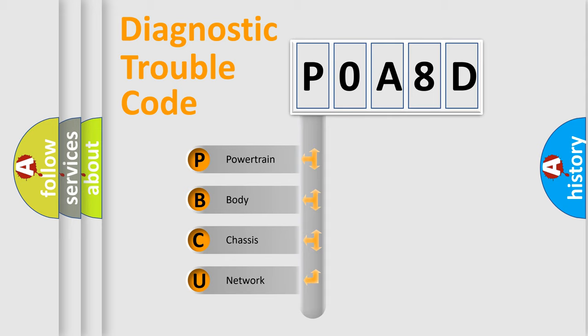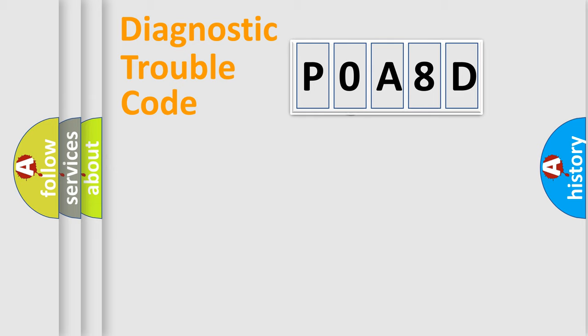We divide the electric system of automobile into four basic units: Powertrain, Body, Chassis, and Network. This distribution is defined in the first character code.